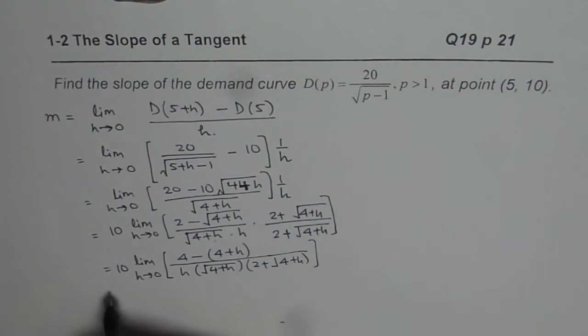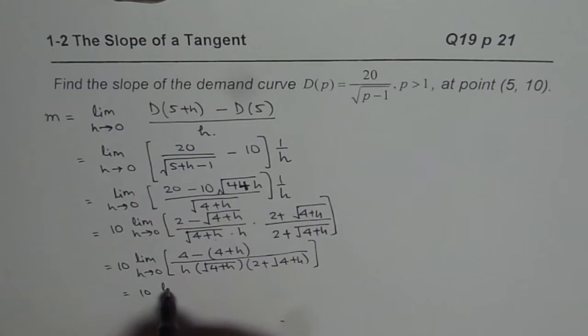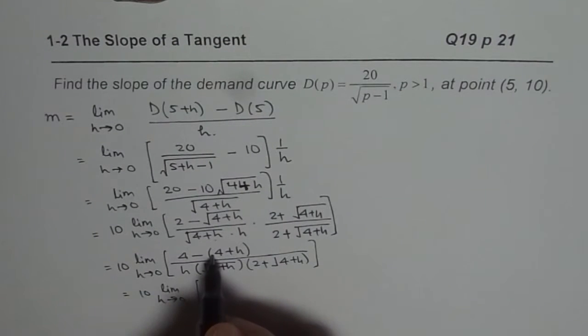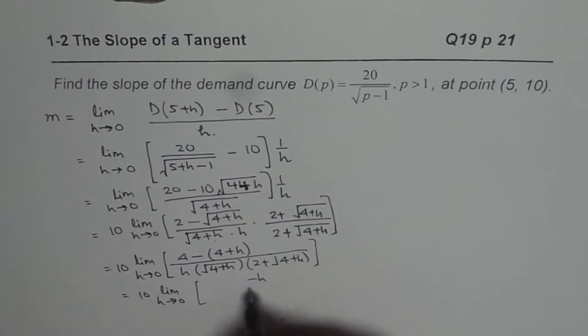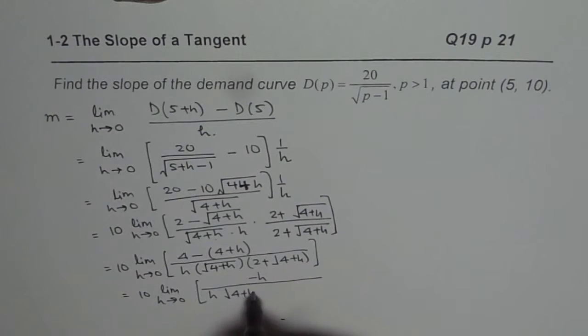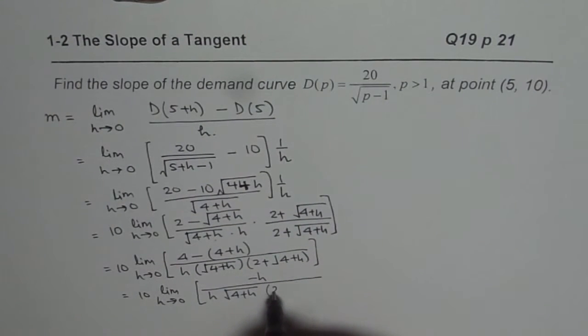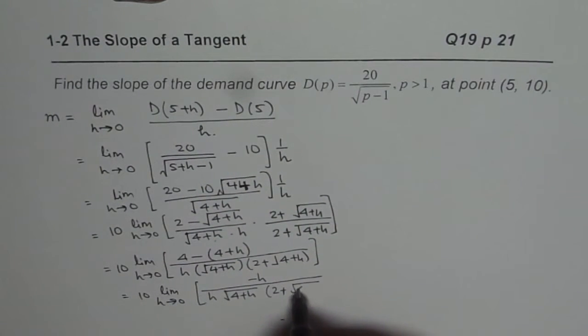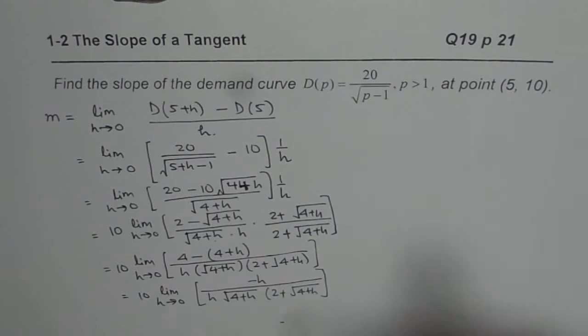Now, the numerator can be simplified further. We have 10, limit H approaches 0. 4 minus 4 is 0, and minus H is what we get in the numerator. Divided by H times square root of 4 plus H times within bracket 2 plus square root of 4 plus H.